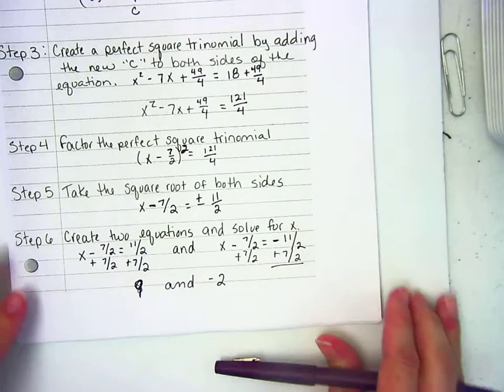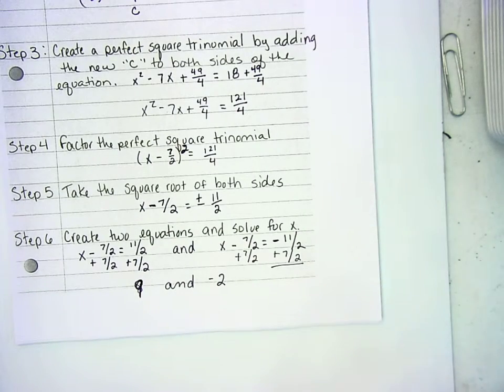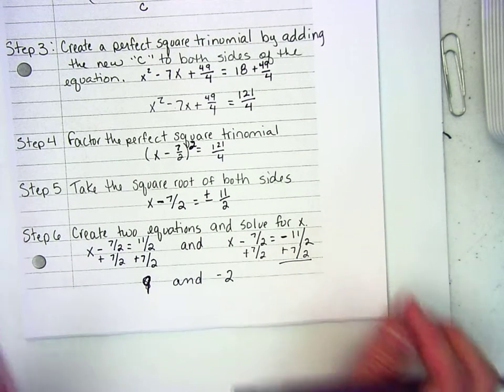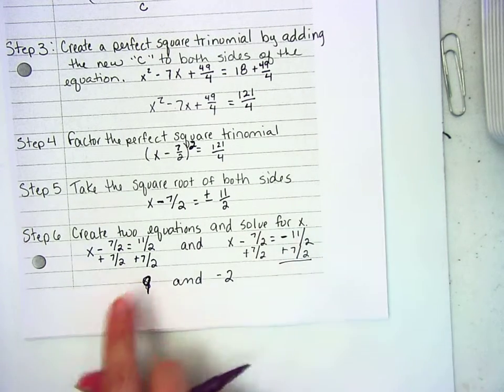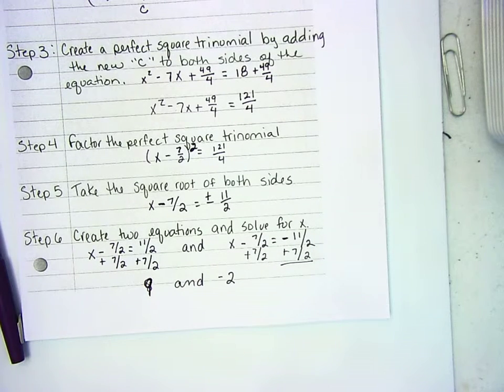I think, oh, I said it wrong. Yeah, it is, it is 9. I am so sorry. I did all of that hard work and messed up on the easy division. Typical, right? Okay.